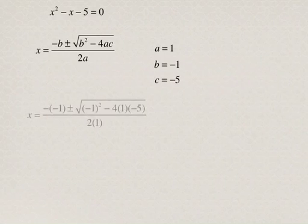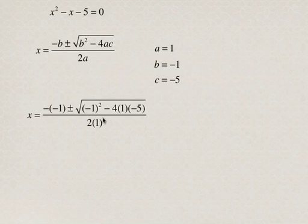When we substitute in and simplify, we end up with two situations: one where we're adding the square root of the discriminant, and another where we're subtracting it.